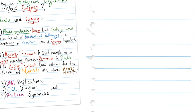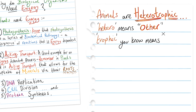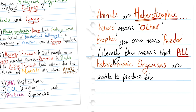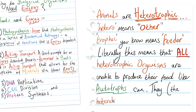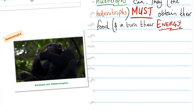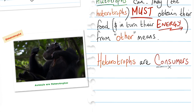Moving on to animals: animals are heterotrophic. Hetero means other, and trophic means feeder. So literally, this means that all heterotrophic organisms are unable to produce their food, like autotrophs can. The heterotrophs must obtain their food, and in turn their energy, from other means. Heterotrophs are therefore consumers.